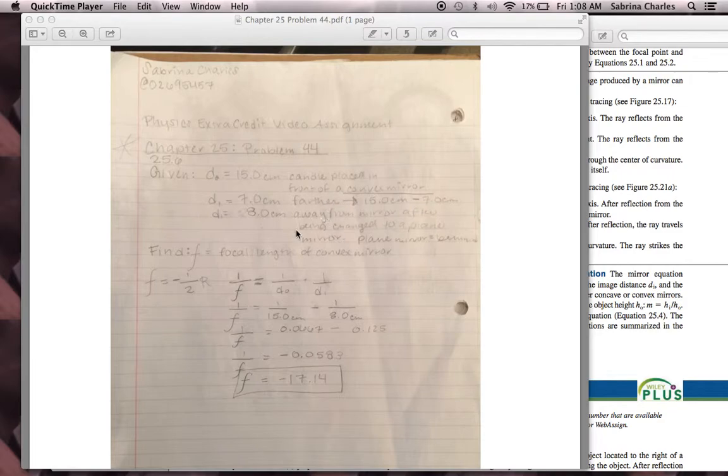And this 8.0 centimeters is the distance away from the mirror after being changed to a plain mirror. Since it's a plain mirror now, the image is going to be behind, so that's going to make it negative. That's an important thing to note because we are going to note that it's negative later down here in the formula.